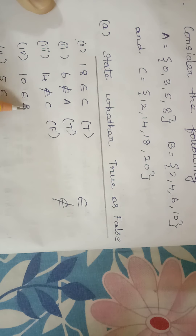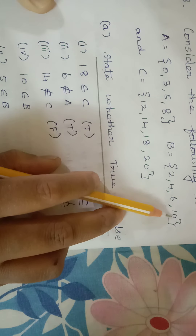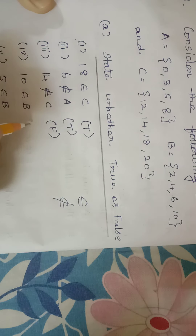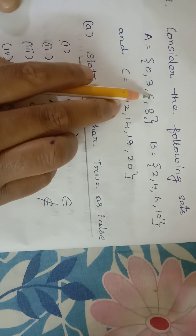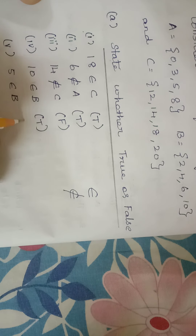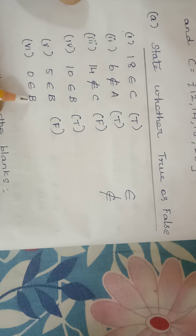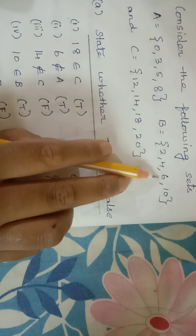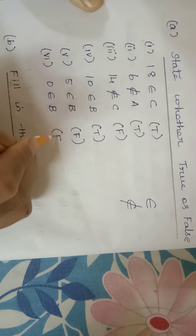10 ∈ B — 10 is in B, so we write it as true. 5 ∈ B — 5 belongs to A, not B. So it is false. 0 ∈ B — there is no 0 in B, so it is false.